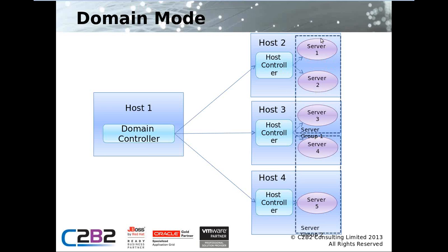We also have the concept of server groups. Here we have server one, two, and three in one server group, and four and five in another server group. The idea is that all servers in the same server group perform the same tasks. When you deploy an application, you generally don't deploy it to an individual server — you deploy it to a server group. It's also possible to manage different server groups in one domain, such as production, staging, or a test server group.